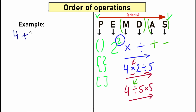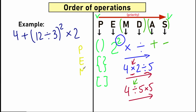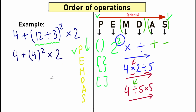So we have the expression: 4 + (12 ÷ 3)² × 2. Write PEMDAS: P, E, M, D, A, S. Now scan what we have. We have parentheses — P stands for parentheses — so the first step is to evaluate the expression inside the parentheses. 12 divided by 3 equals 4. So now we have: 4 + 4² × 2.